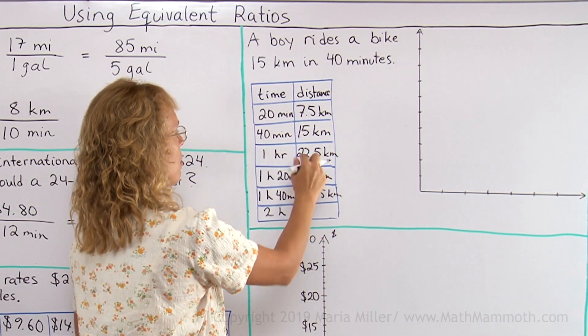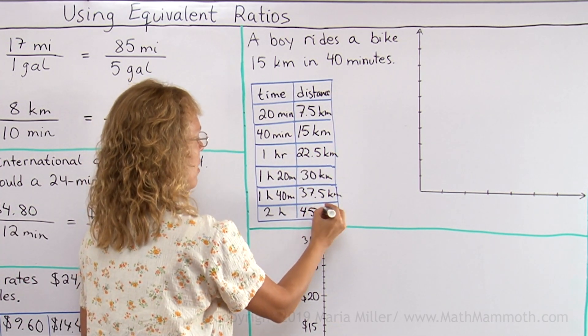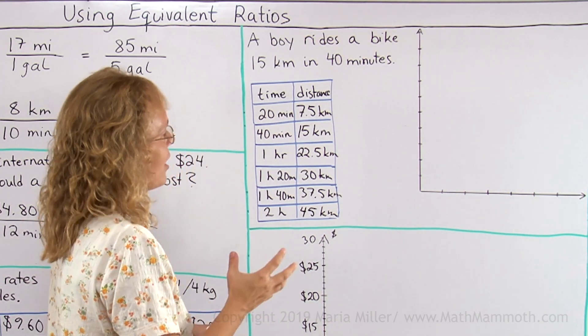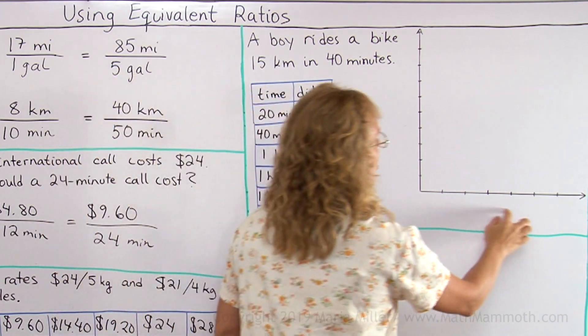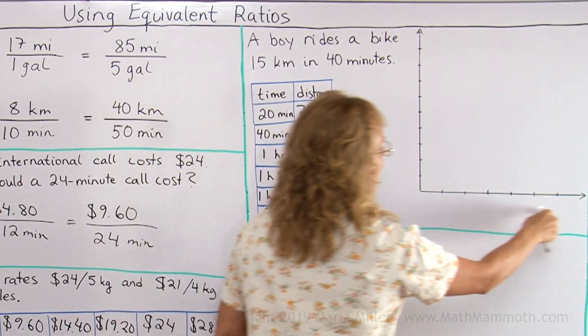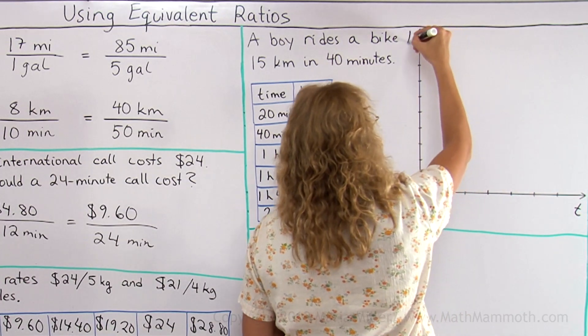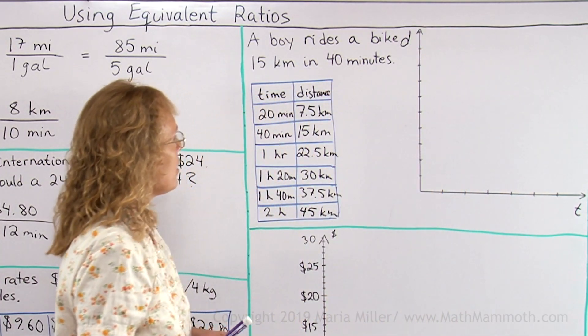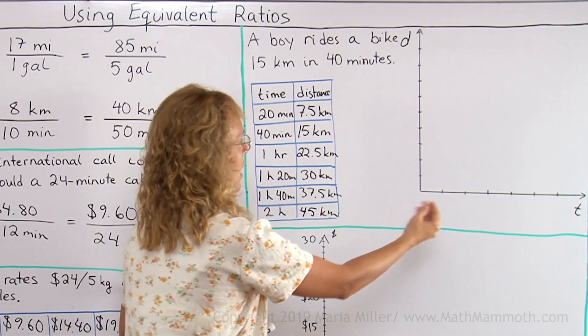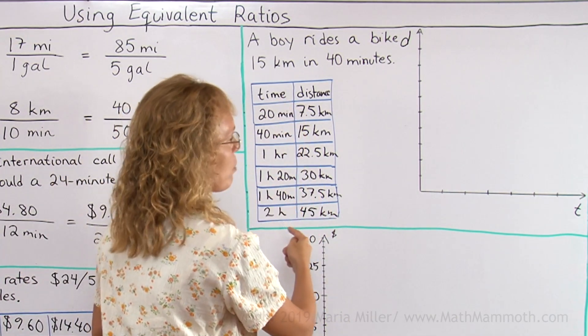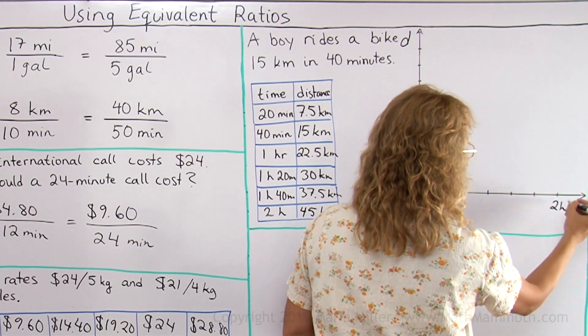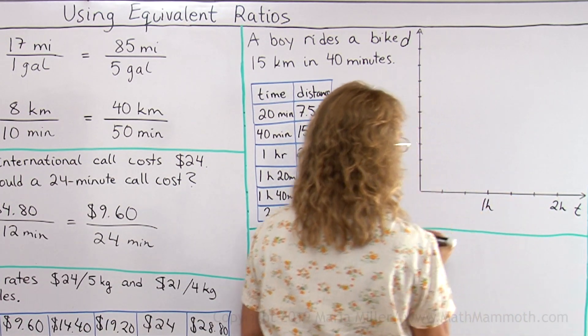And then, two hours, just double that. So we get 45 kilometers. And now, we're going to plot these points in the coordinate plane. I have my two axes here. This will be the time axis. This will be the distance. And I have my tick marks. I need to figure out the scale for this axis. This one goes up to two hours. So this could be my two hours and this could be my one hour.